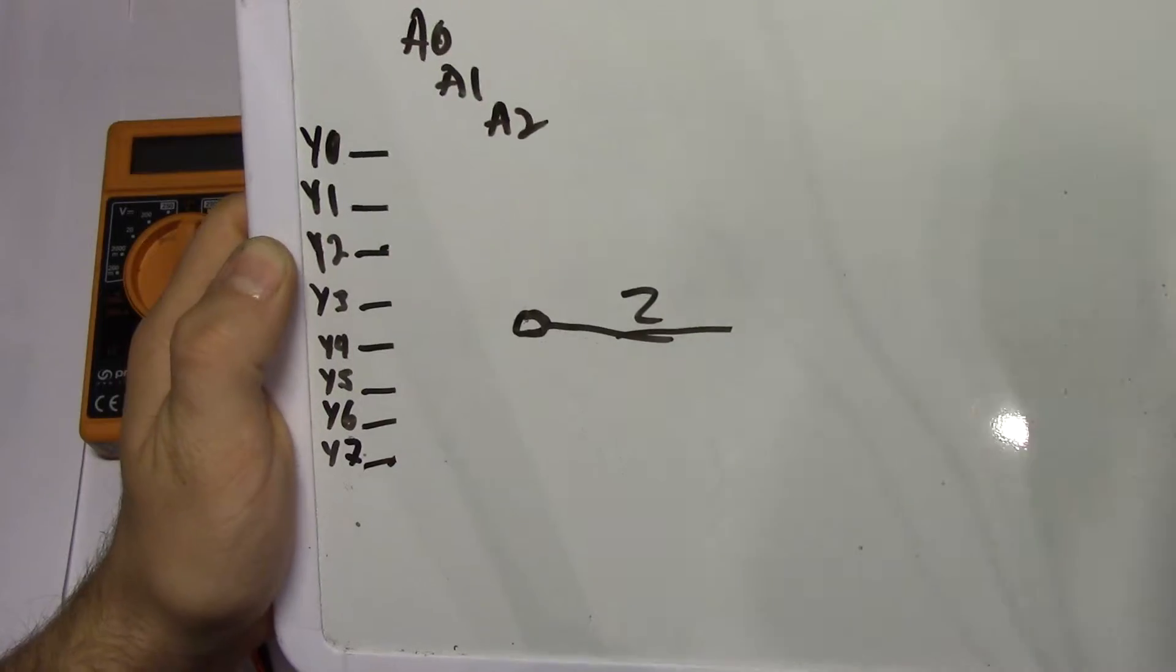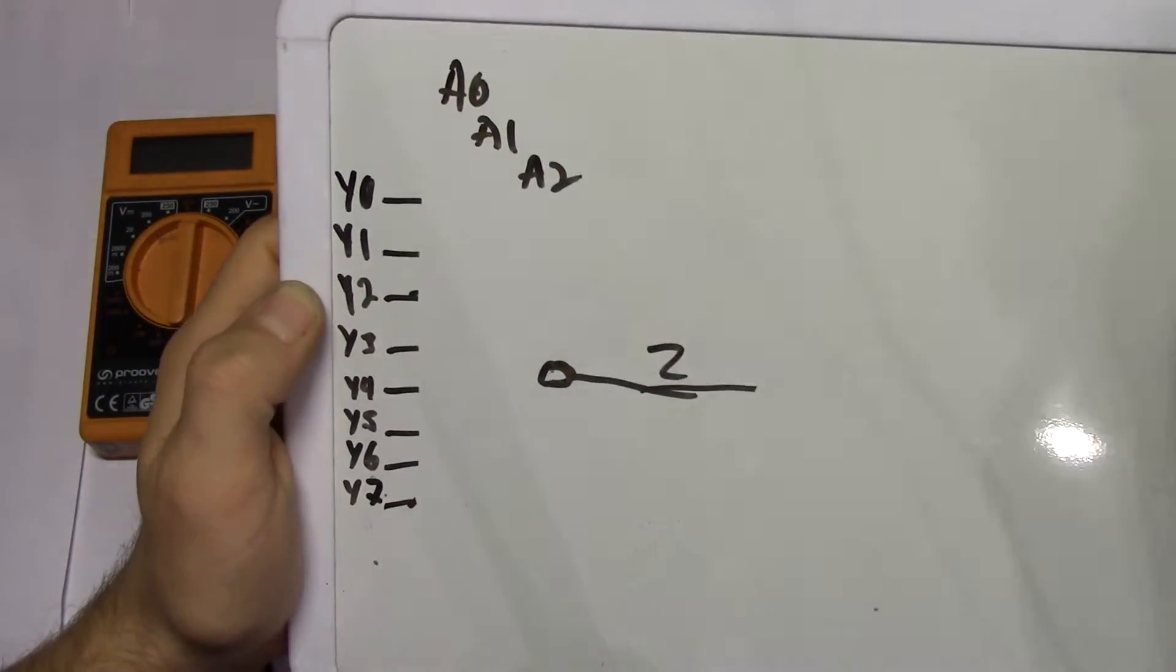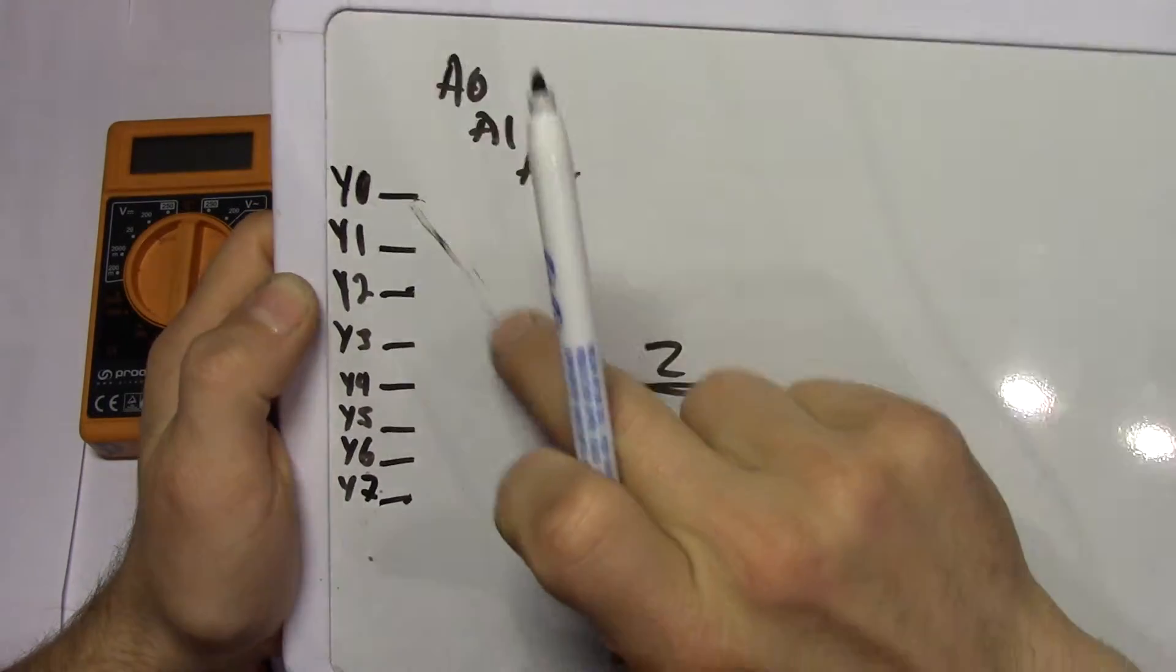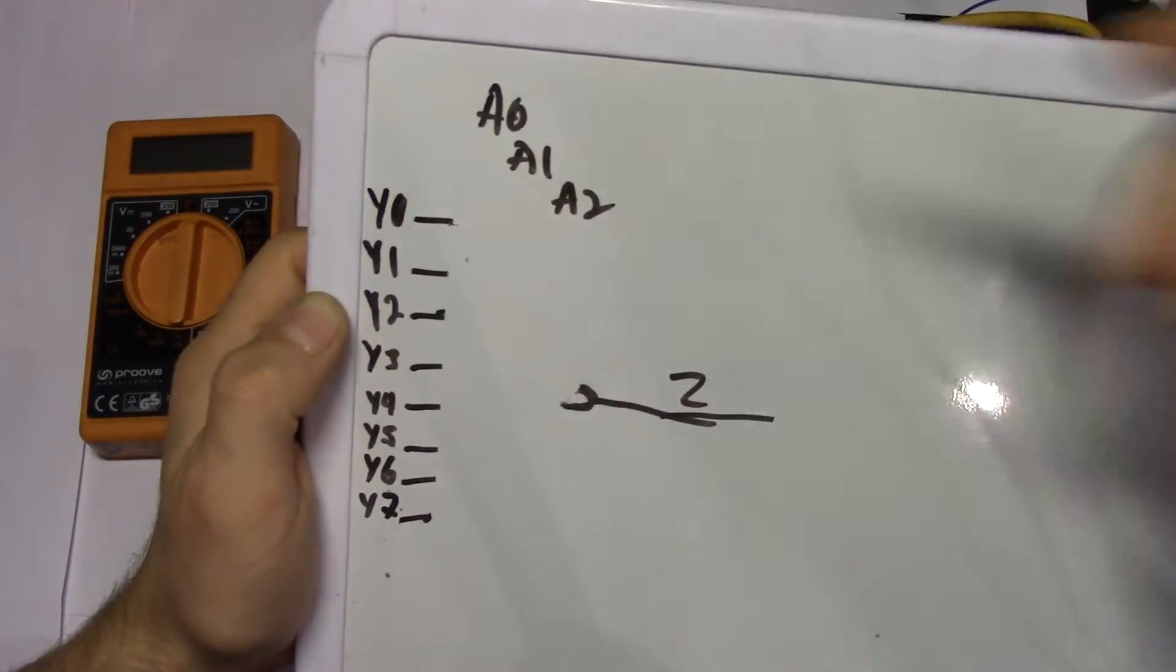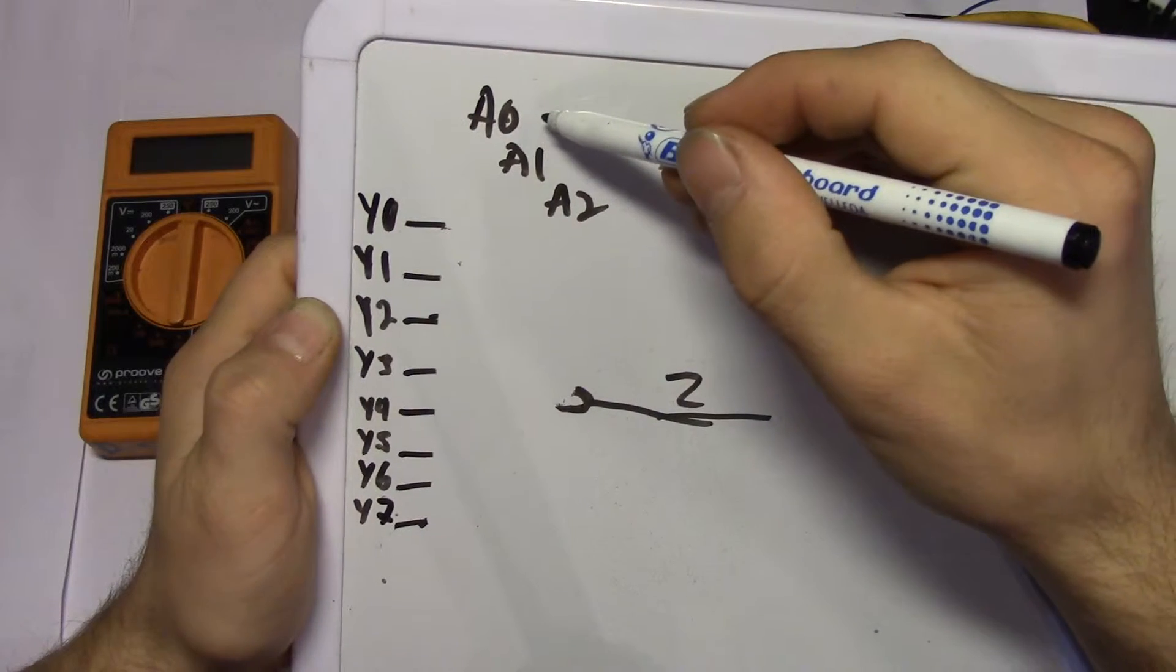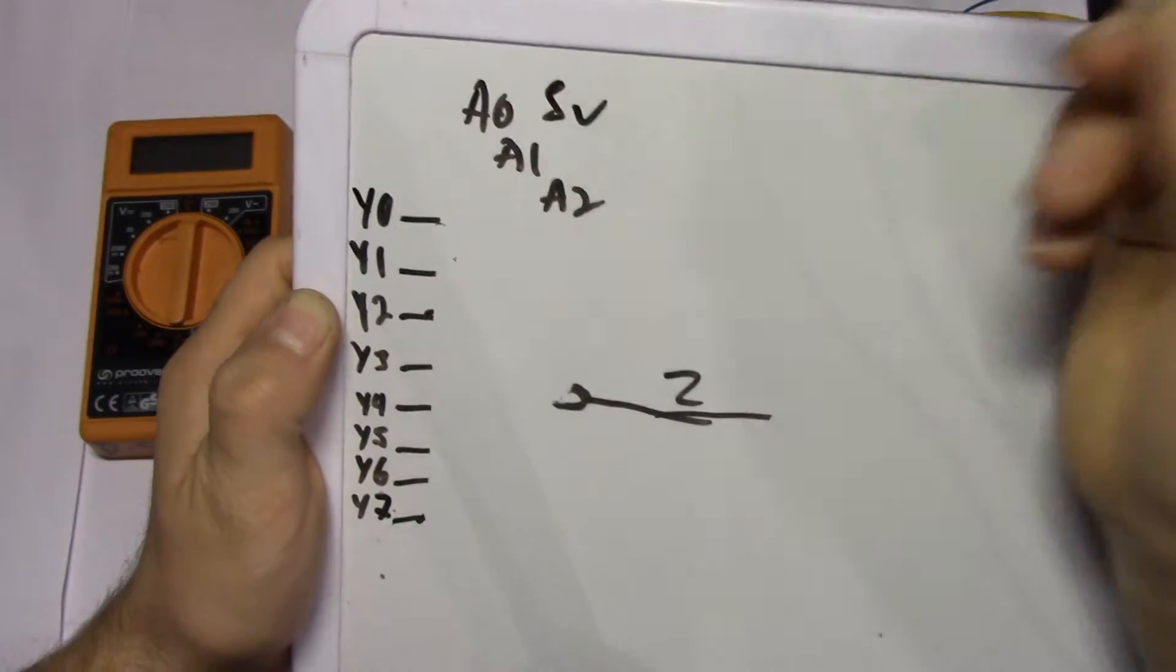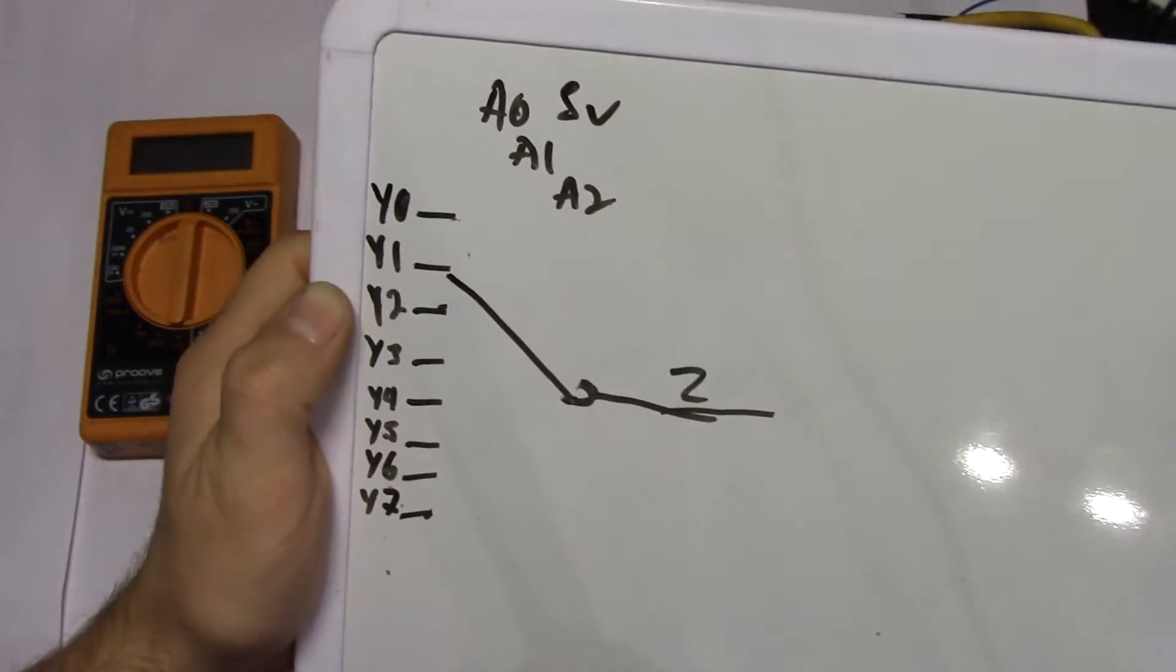Let's say all of them are zero, we have a connection here. And then we take a switch and we put A0 to high, just like five volts, suddenly we have a connection here.